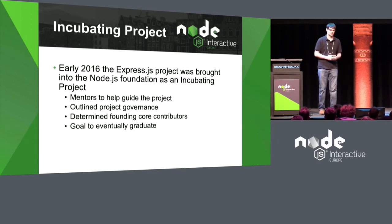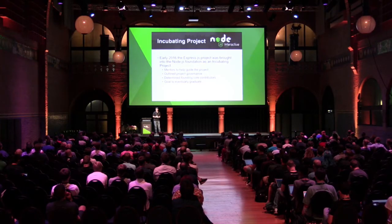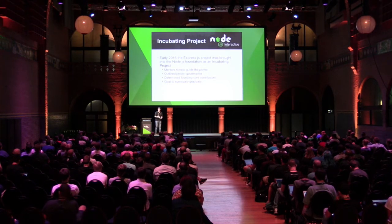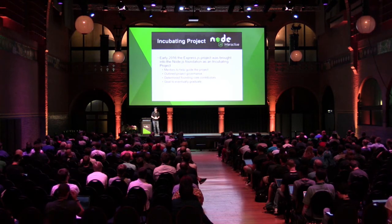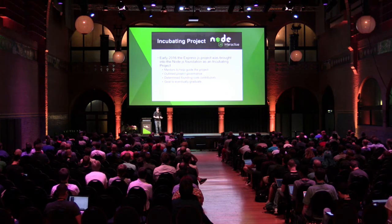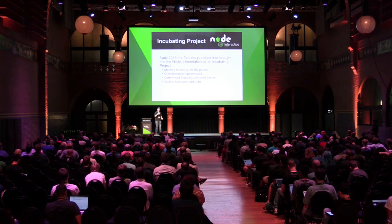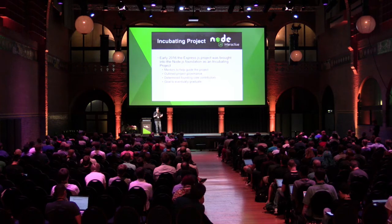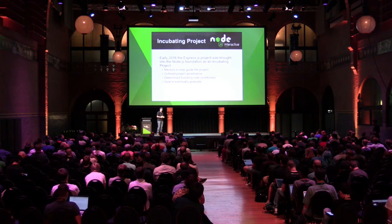Part of this process, they helped us outline project governance — we're using a default template that the incubating project gives us, and over time we'll iterate to make it more suited to how we're run. Anybody could use the template even if they're not part of this program. We also went through and tried to determine who the actual founding core contributors to Express were. Express has been around since the summer of 2009, first published to NPM in winter 2010, and has had people come and go — there was a big mess of who the actual contributors even were.